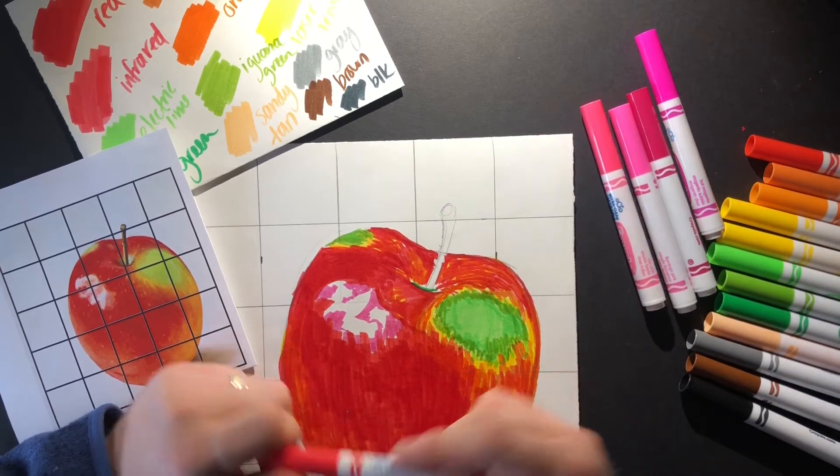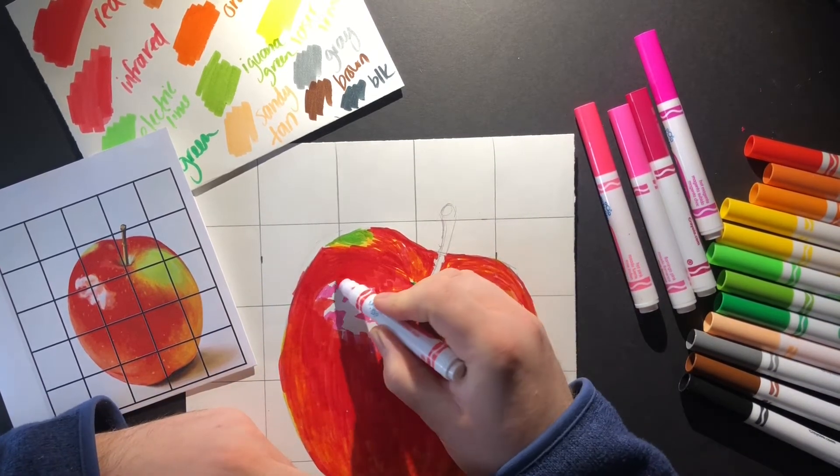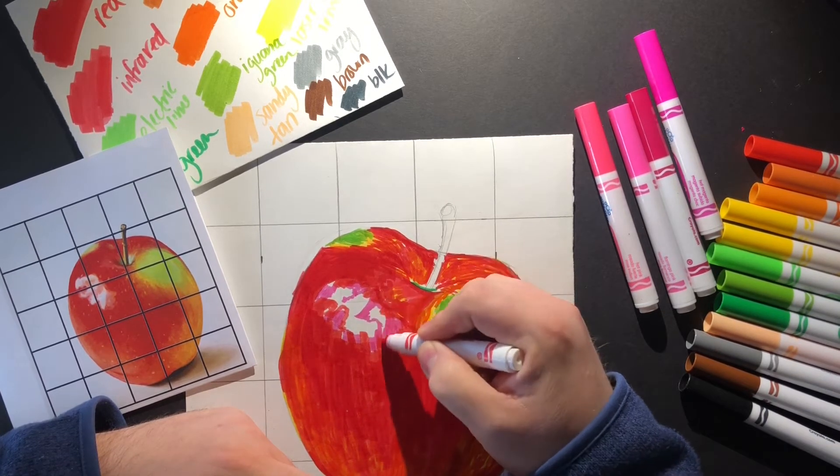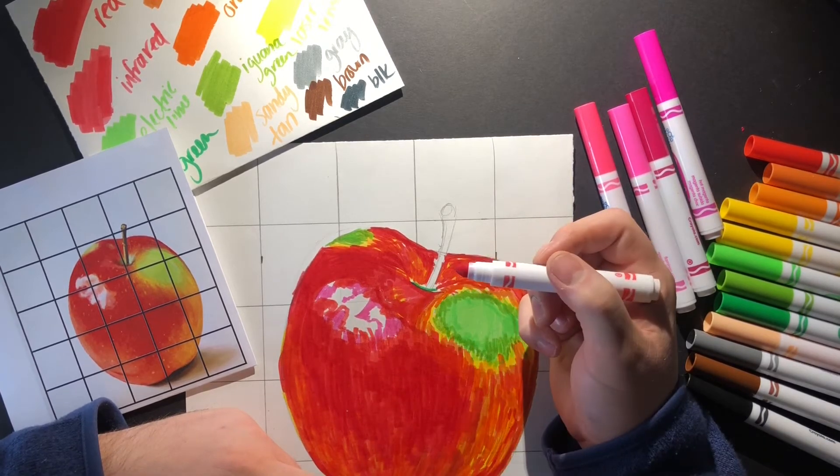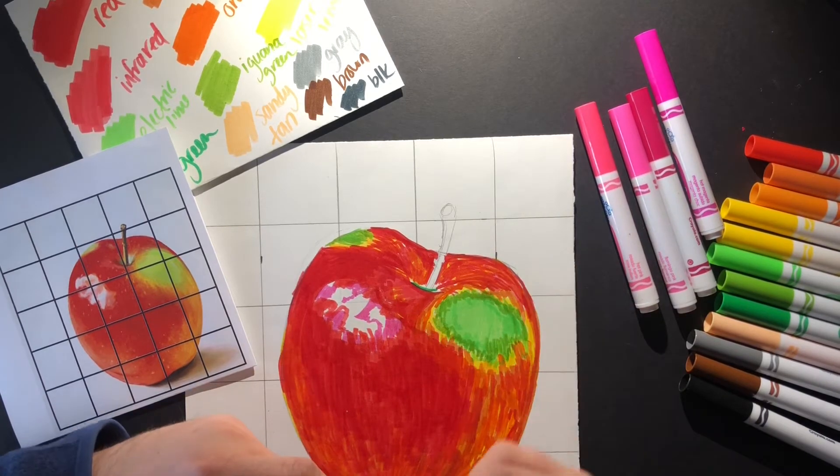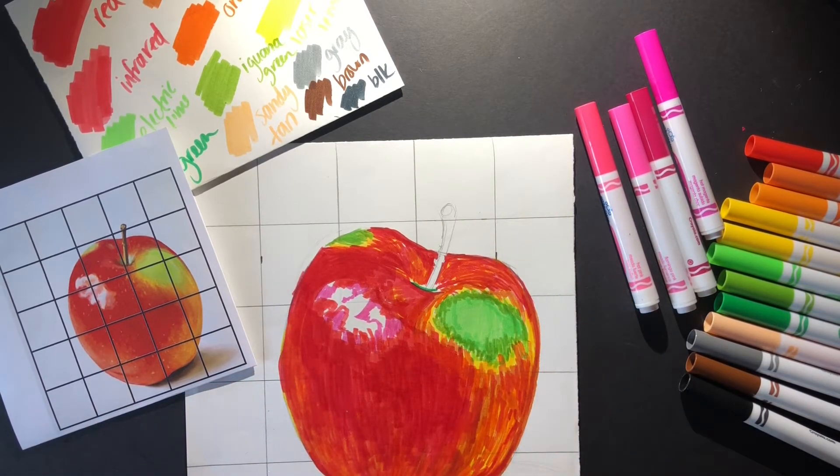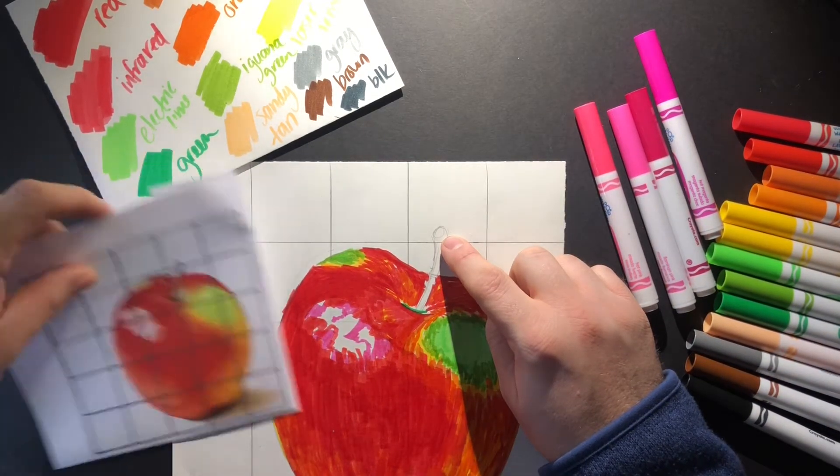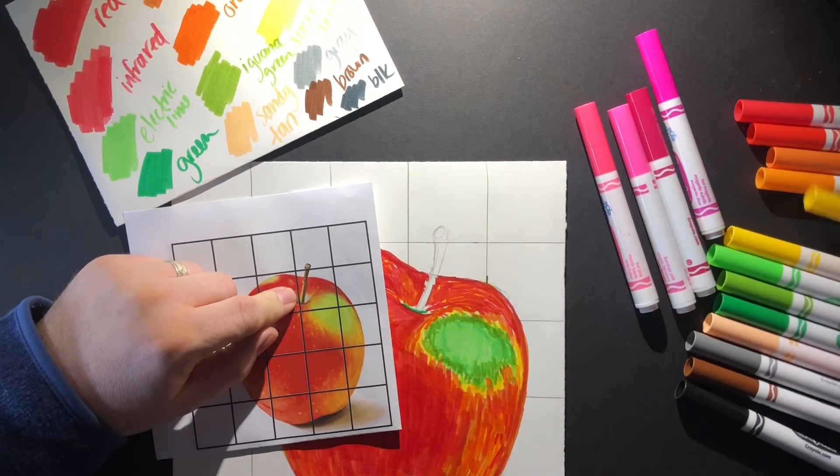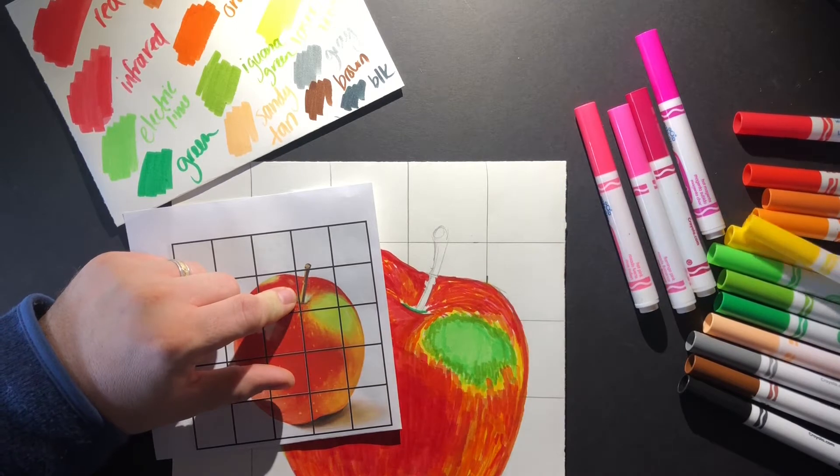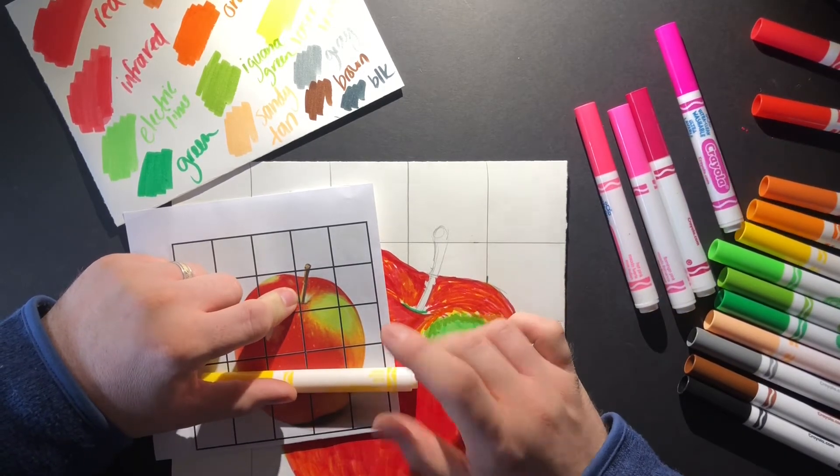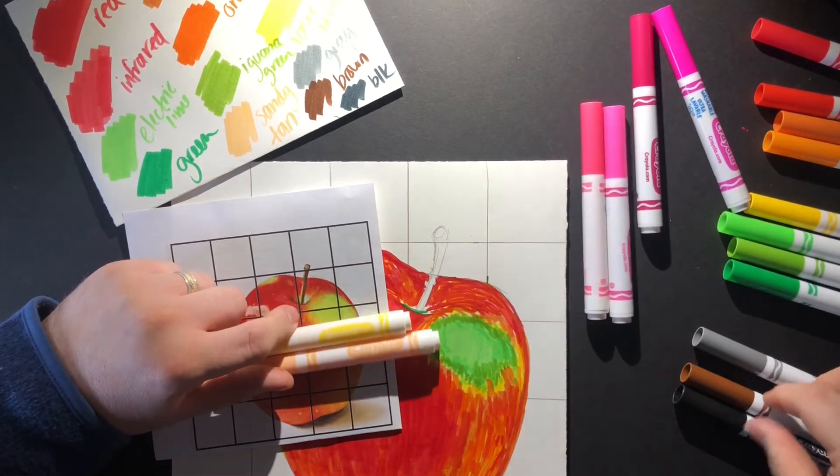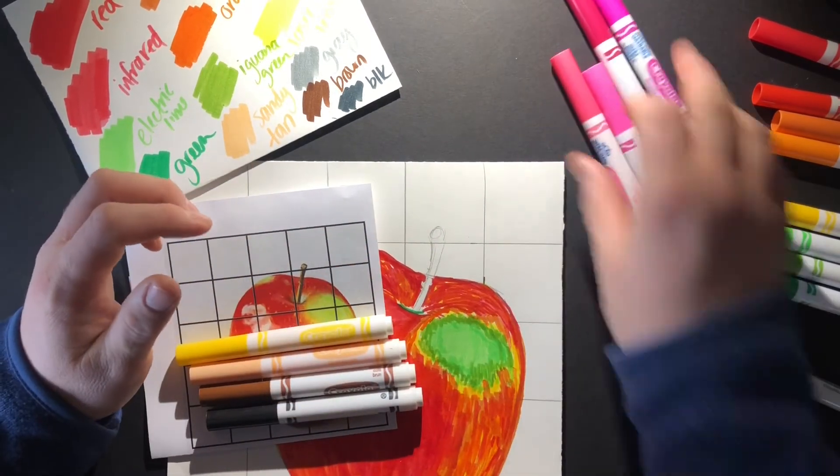Then I'm going to go back with a red around the edge just to soften it. Okay, so let's do this down. If you look really closely there's probably some yellow.